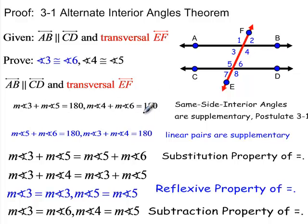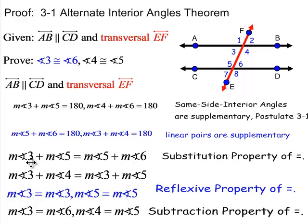So they sum to 180 degrees. We also know that angles 5 and 6, and angles 3 and 4, are a linear pair. Since these combinations — 3 and 5, 4 and 6, 5 and 6, and 3 and 4 — are all equal to 180, we can set those combinations equal to each other because they have equal measure. When we set them equal, we can subtract out the measure of angle 5, leaving us the measure of angle 3 and the measure of angle 6 — which is the direction of what we're trying to prove.